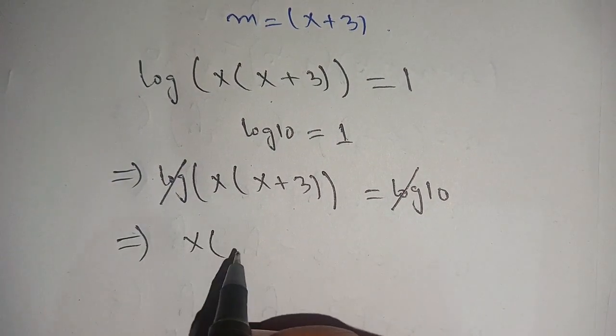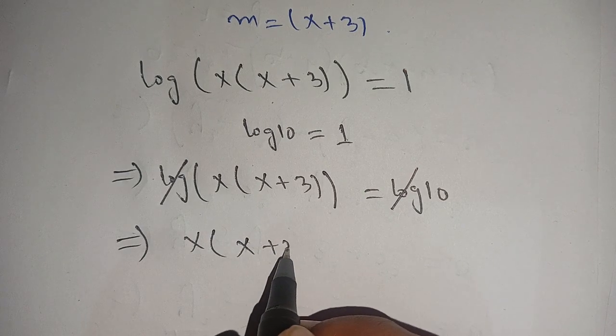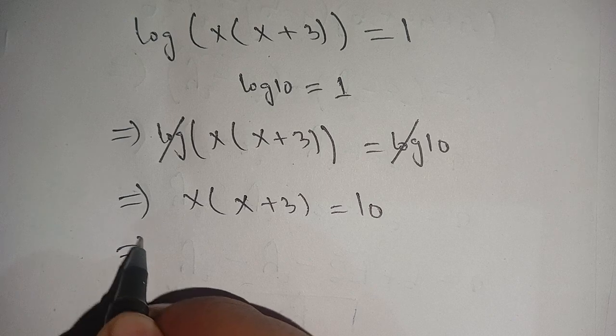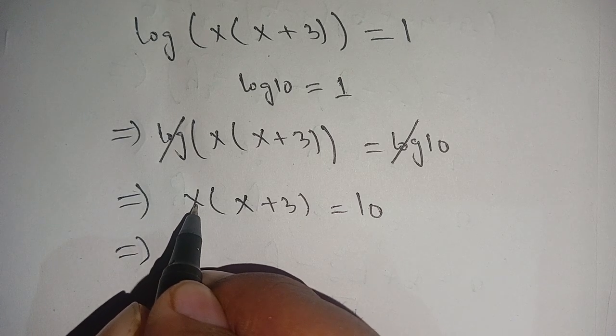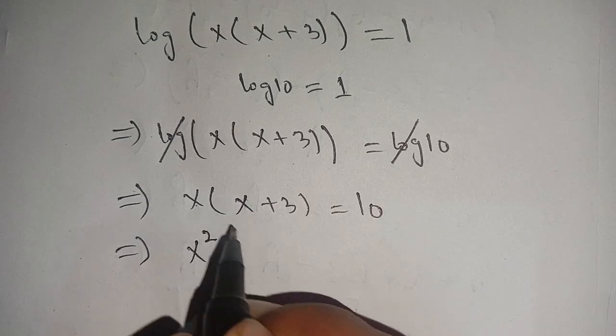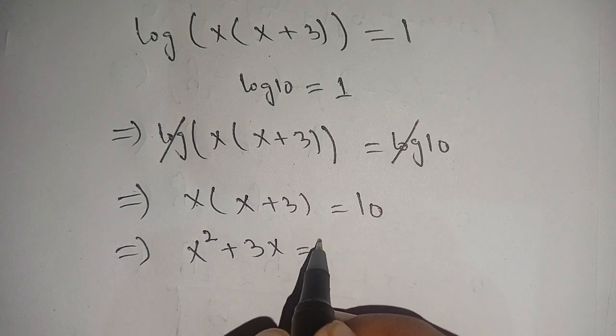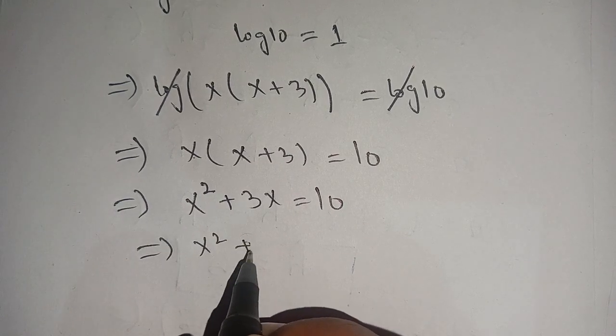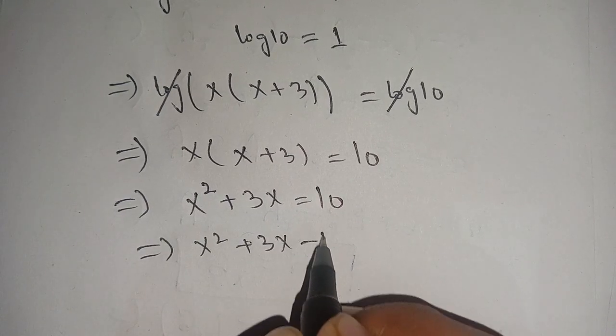Now we can multiply it. x times x becomes x squared plus 3 times x is equal to 10, which implies x squared plus 3x minus 10 is equal to 0.